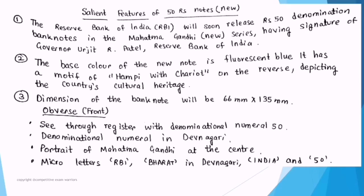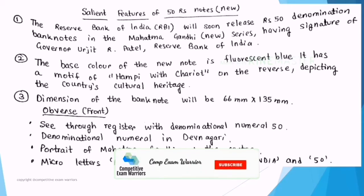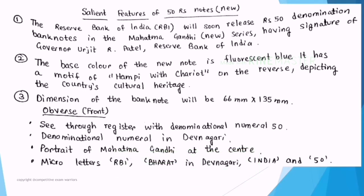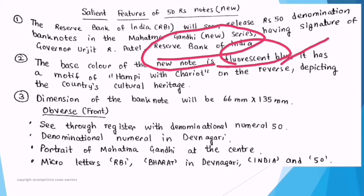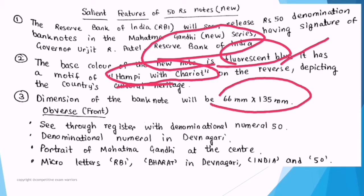Next, let's discuss the salient features of the 50 rupees note. The Reserve Bank of India released 50 denomination bank notes in the Mahatma Gandhi series, bearing the signature of then-governor Urjit Patel. The base color of the new note is fluorescent blue — important to remember. It features the motif of Hampi with chariot on the reverse, depicting the country's cultural heritage. The dimension of this bank note is 66 millimeter by 135 millimeter.